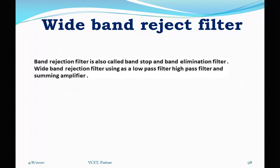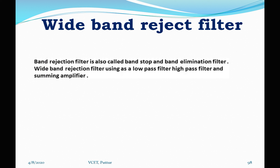The wide band reject filter uses a low pass filter section, a high pass filter section, and a summing amplifier. Using these three combinations, we design a wide band rejection filter. To realize this wide band reject response, FL is the lower cutoff frequency for the high pass filter, and FH is the higher cutoff frequency of the low pass filter. We require that FL should be greater than FH.